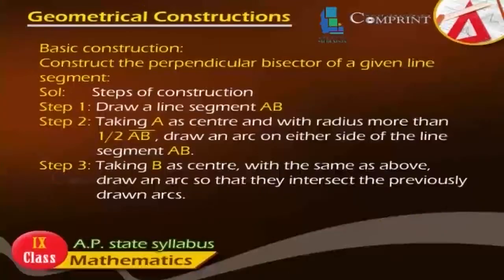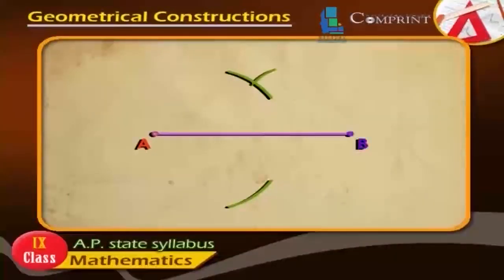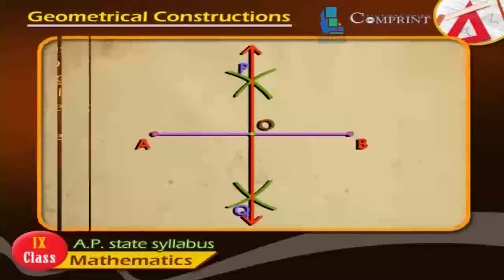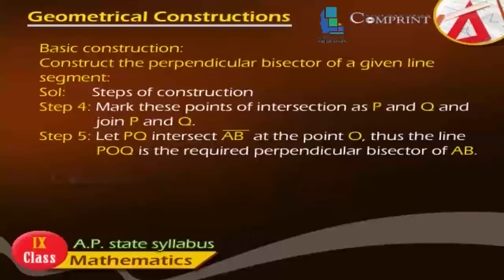Step 3: Taking B as center with the same radius as above, draw an arc so that they intersect the previously drawn arcs. Step 4: Mark these points of intersection as P and Q, and join P and Q. Step 5: Let P and Q intersect line AB at point O. Thus, the line POQ is the required perpendicular bisector of AB.